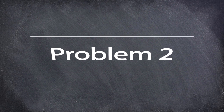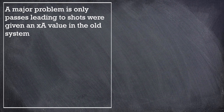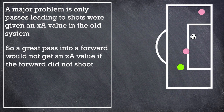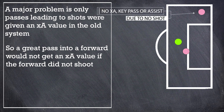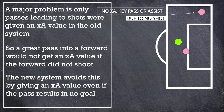In addition, a problem arises when they only calculated expected assists on passes which ended up in a shot. Because what happens if a player plays a great pass into the 6 yard box and the striker opts to take a touch but then he's tackled? This would mean that the great pass from the midfielder would not get an expected assist value, an assist, or even a key pass. So this is what expected assist looks to avoid.